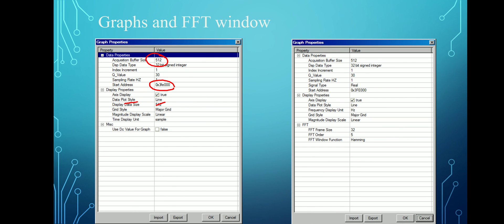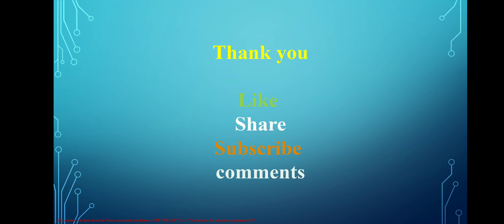This is the way to create a new program using Code Composer Studio. In the next lecture, we will see some advanced DSP programming — for example, GPIO (general purpose input output) and how we can use GPIO for particular applications. We will look in detail at GPIO pins, how to access them, and which pins can be used for what purpose. Thank you. If you find any difficulties, please comment in the comment section and don't forget to like, share, and subscribe to my channel.